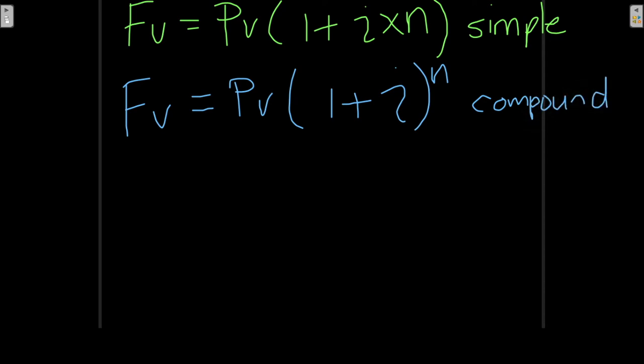We are going to look at some examples on compound interest in this lecture. Similar to simple interest, in the formula we have four quantities: the future value, the present value, the interest rate, and the number of compounding periods. In a question you will be given three of these four quantities and you have to find the fourth one.